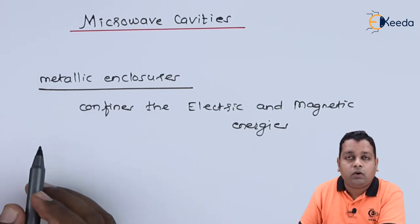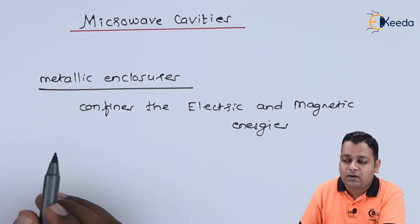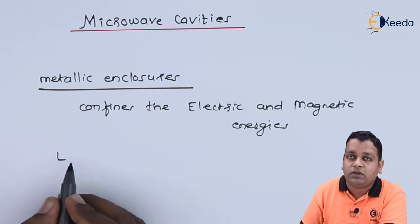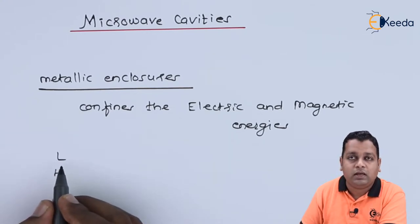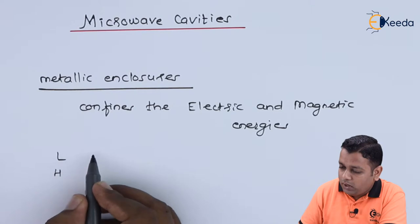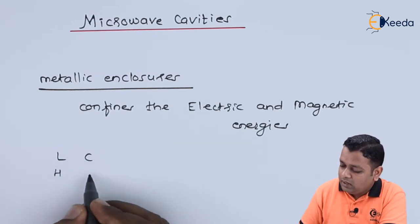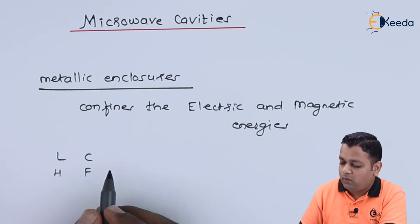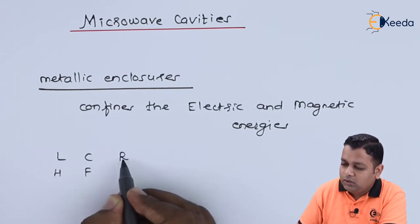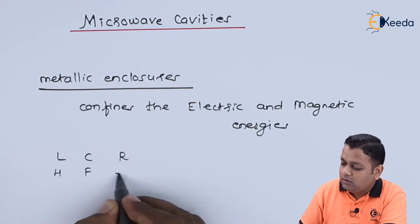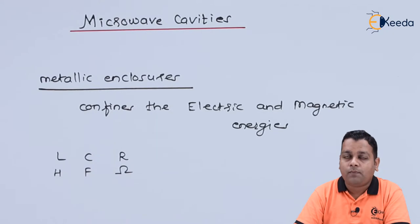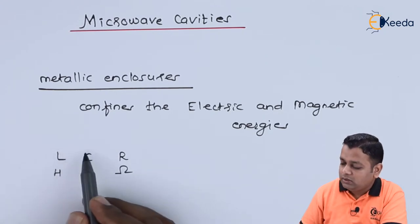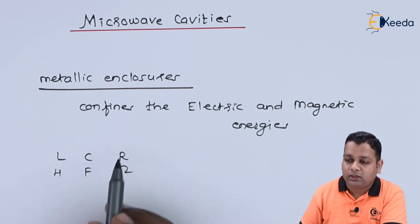When we talk about the energies to be stored and dissipated, we have the equivalent inductance represented by capital L measured in Henrys, and the equivalent capacitance represented by capital C measured in Farads. Energy dissipation is confined to the pure resistance measured in Ohms. So in the total operation of Microwave Cavity Resonators, we have storage corresponding to inductance and capacitance, and dissipation in terms of resistance.